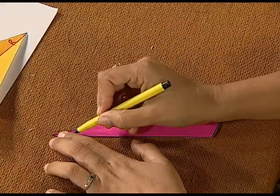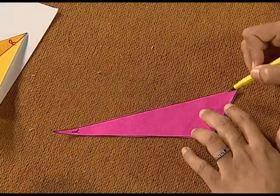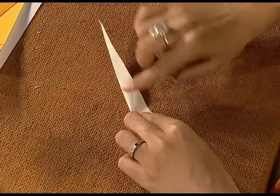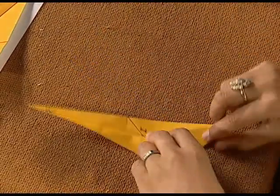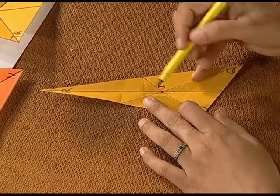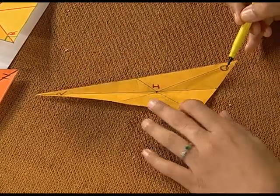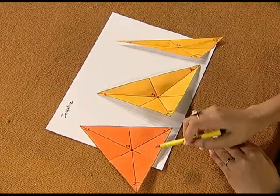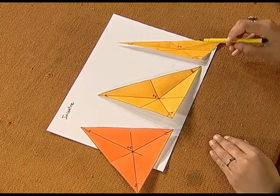Now take the case of an obtuse triangle. We have obtuse triangle R P Q. Using the same process of folding, we find the angle bisector of angle P, angle bisector of angle R, and angle bisector of angle Q. Unfold and see that the angle bisectors of angles R, P, and Q meet at a common point called the incenter. Observe carefully that in all three types of triangles — acute, right, and obtuse — the incenter lies inside the triangle.